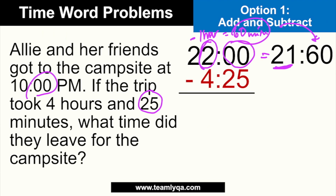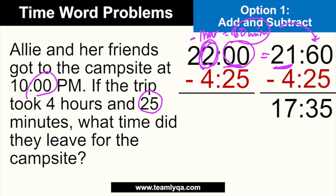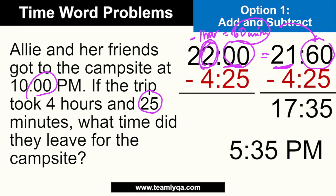Now that it's rearranged, it's no longer a problem. 60 minus 25 is 35, and 21 minus 4 gives you 17. So the answer is 17:35, or 5:35 PM. I converted it by subtracting 12 to get the PM time. If you're confused about that conversion step, it was covered in the first video.